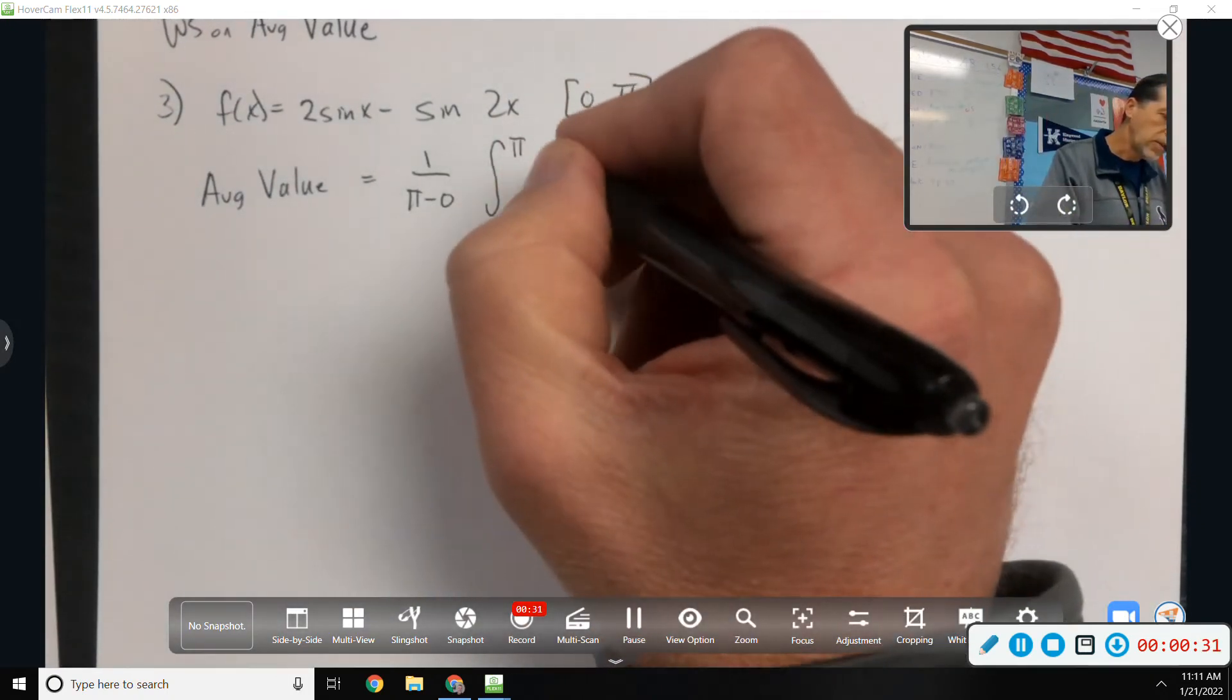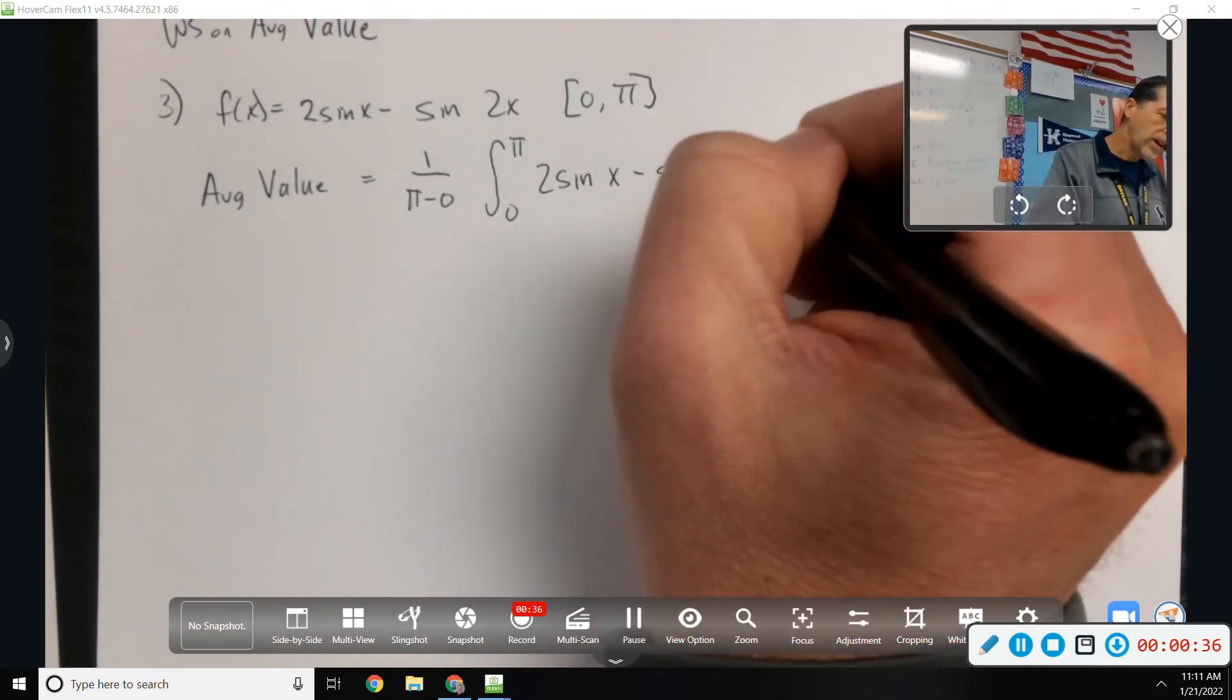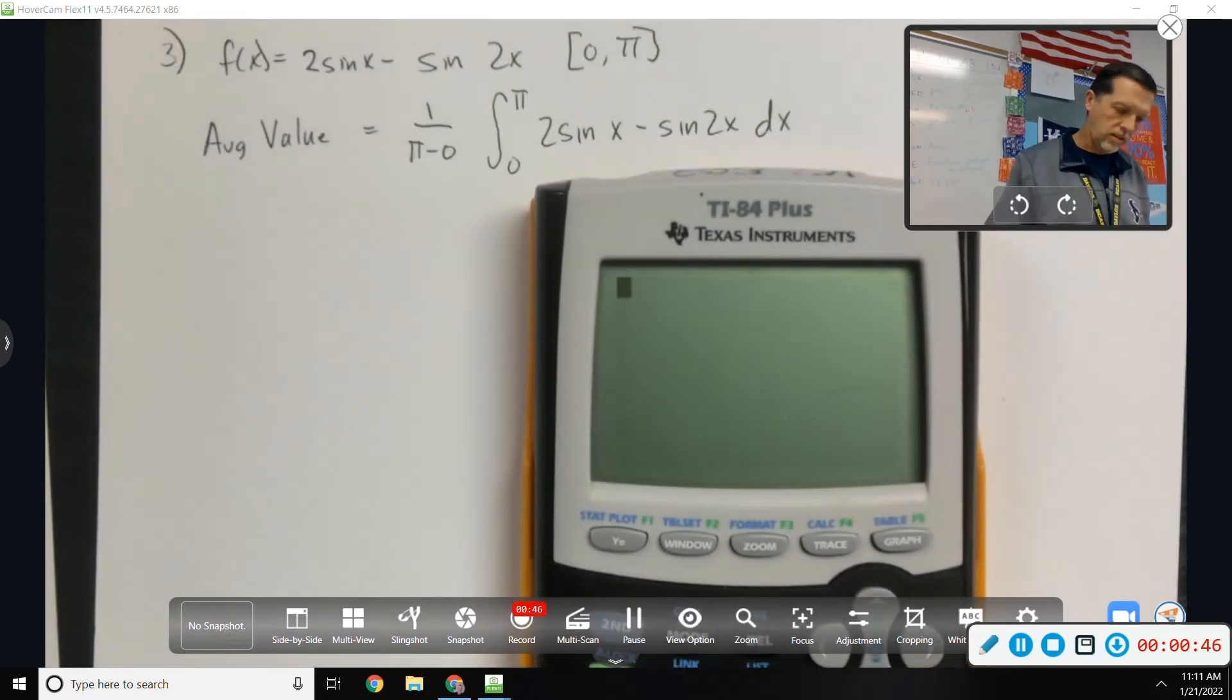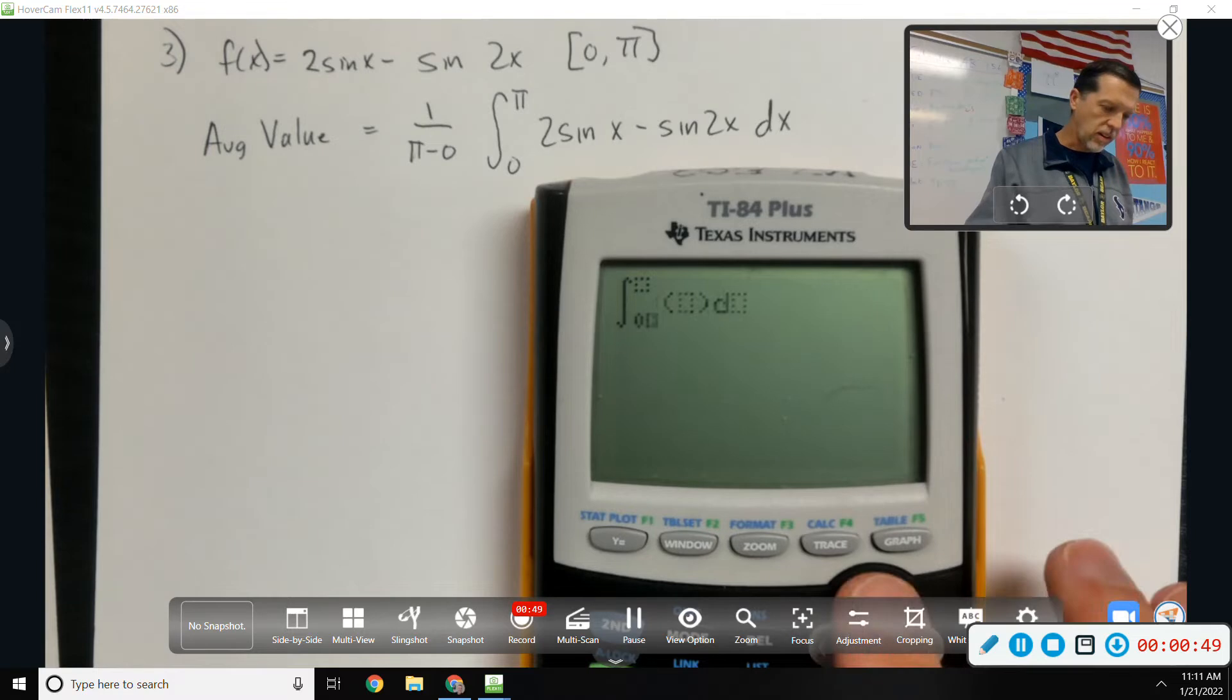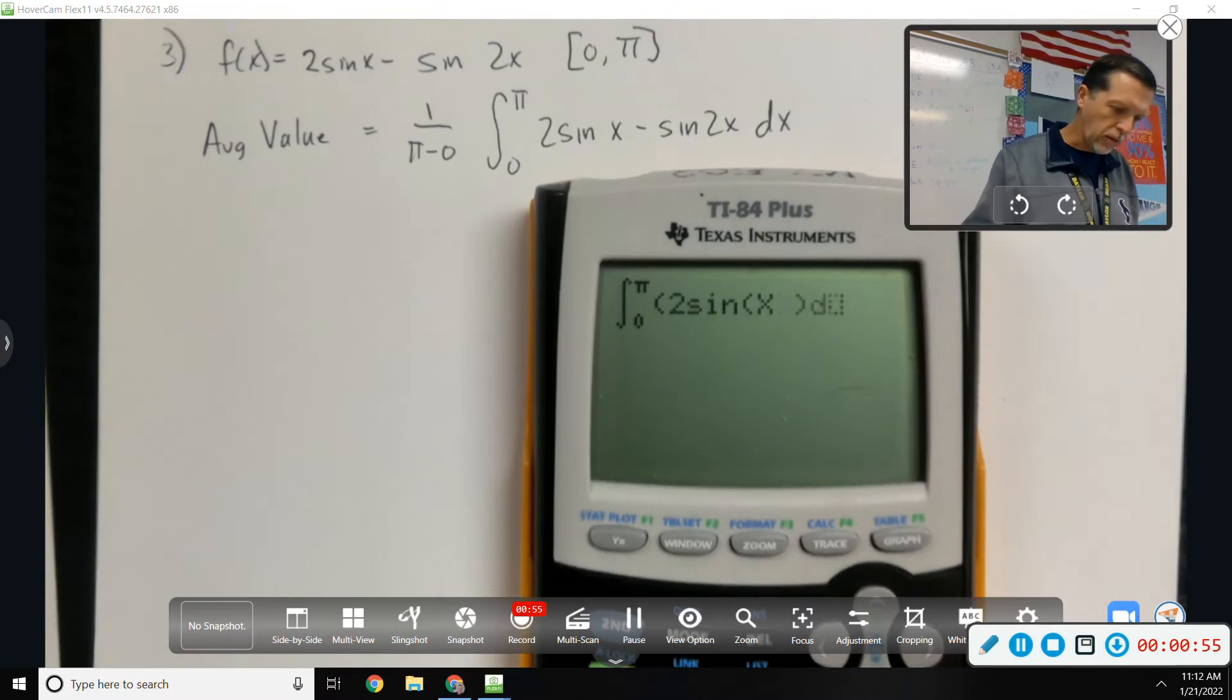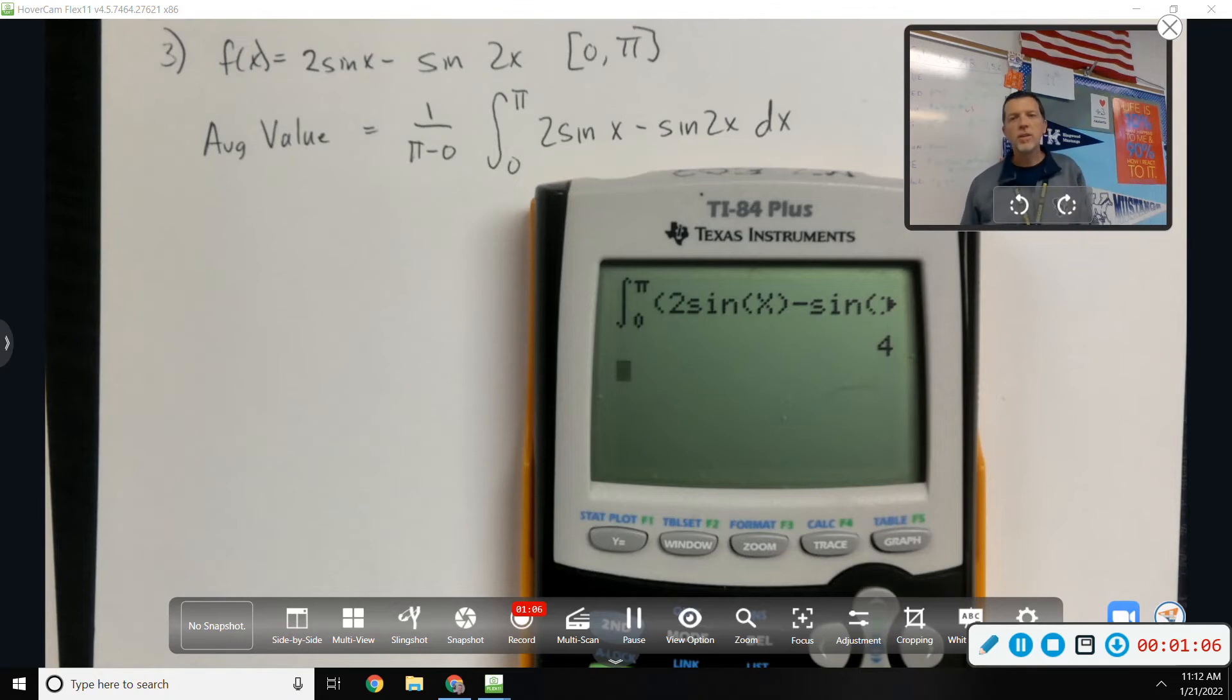So, integral from zero to pi, two sine x minus sine 2x. I really don't want to do that by hand. I think I could if I needed to. But, math nine, our friend. Zero to pi, two sine x, careful with parentheses, minus sine 2x. dx came out to four, that's kind of nice.